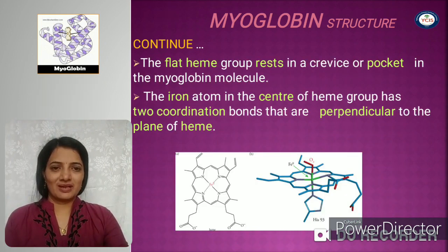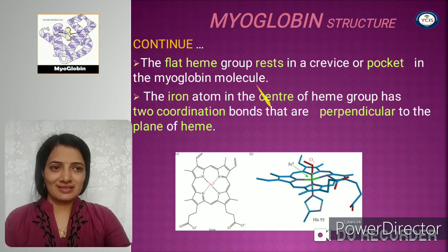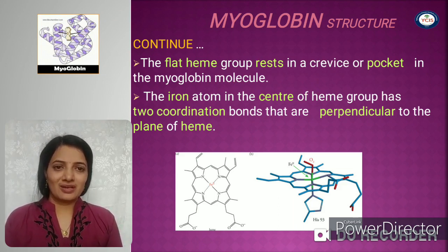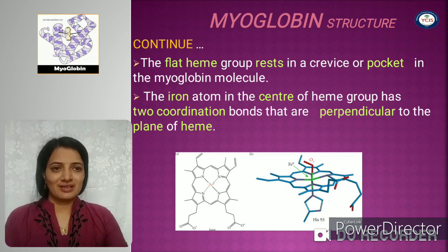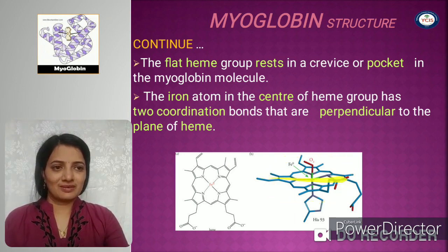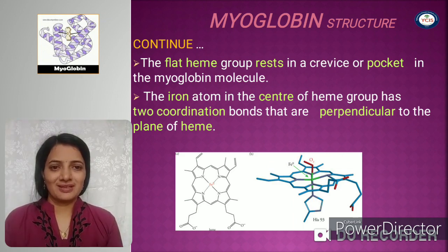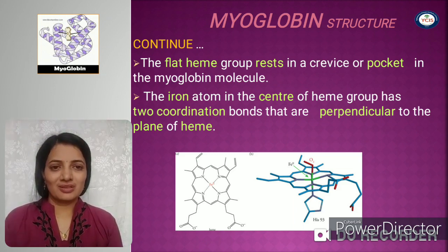The heme group is flat and rests in the cavity or pocket of the myoglobin molecule. The iron atom is present at the center of the porphyrin ring, while the 5th and 6th coordination positions of the heme are perpendicular to the porphyrin ring. There is a separate video for the heme group details, as well as how to draw the structure of the heme group.